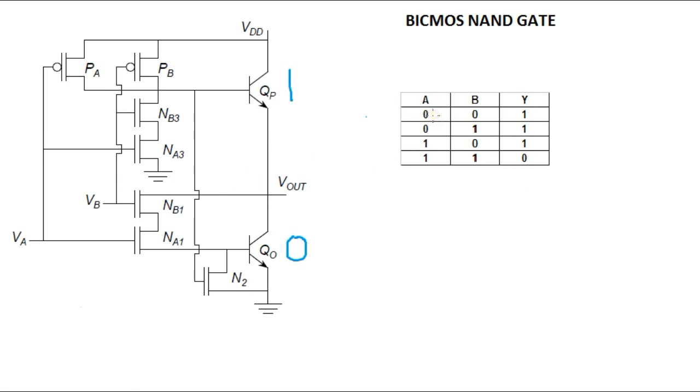When both the inputs are high, PA and PB will become off, and NA1 and NB1 will become on. Output will be pulled to 0. When both these are on, the current will flow here and this will turn it on, and the output, which is here, will get pulled to 0.